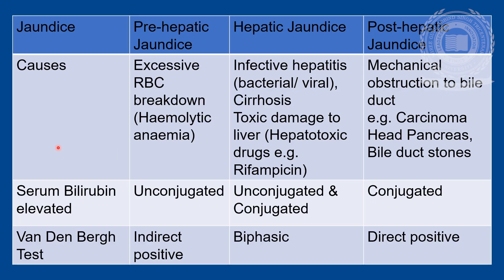Pre-hepatic jaundice is caused by excessive RBC breakdown, for example in hemolytic anemia. Hepatic jaundice is caused by infective hepatitis (bacterial or viral), cirrhosis, or toxic damage to the liver by hepatotoxic drugs such as the anti-tubercular drug rifampicin. Post-hepatic jaundice is caused by mechanical obstruction to the bile duct, due to carcinoma of the head of the pancreas or bile duct stones. The type of bilirubin raised in serum is unconjugated in pre-hepatic jaundice, both unconjugated and conjugated in hepatic jaundice, and only conjugated in post-hepatic jaundice. The van den Bergh test is indirect positive in pre-hepatic jaundice, biphasic in hepatic jaundice, and only direct positive in post-hepatic jaundice.